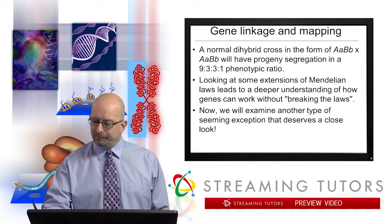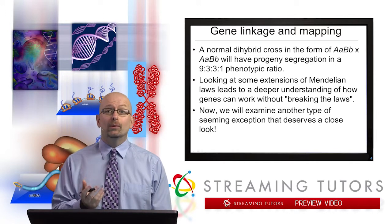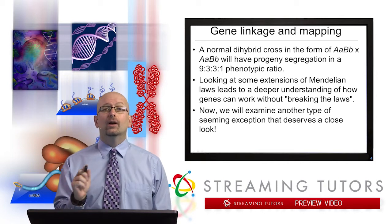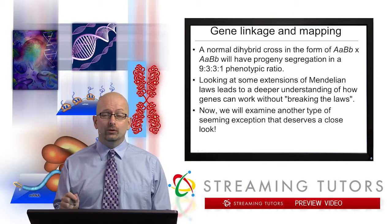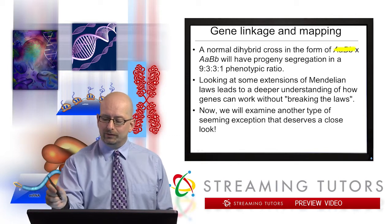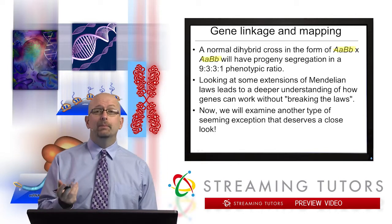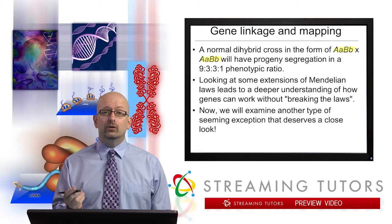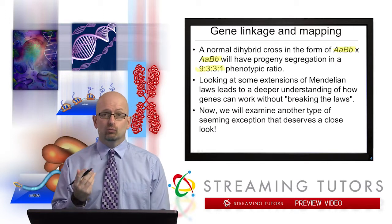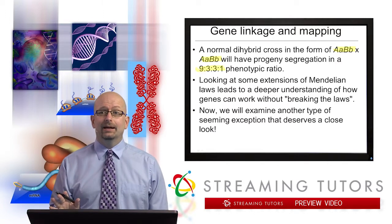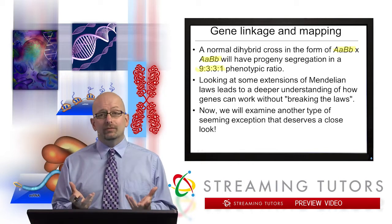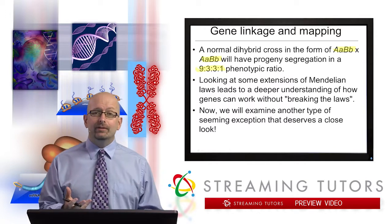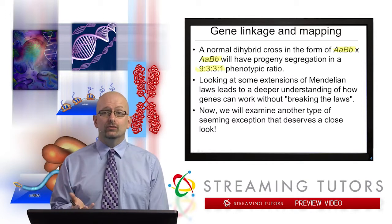I think you'll agree that we have decided that in a normal dihybrid cross — and when I say that, I mean a dihybrid cross of the form of two double heterozygotes, which is how we've been doing it: big A, little a, big B, little b — you know that we're going to have a 9 to 3 to 3 to 1 phenotypic ratio. And that's because of independent assortment. Remember that the 9 to 3 to 3 to 1 ratio was the evidence that independent assortment does in fact take place.